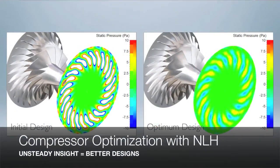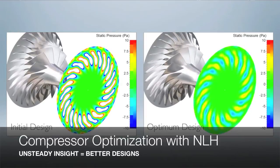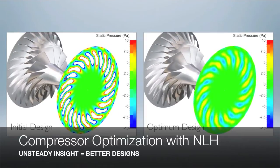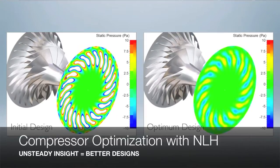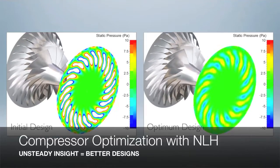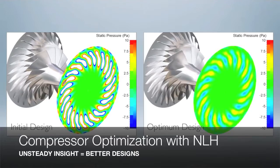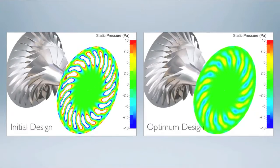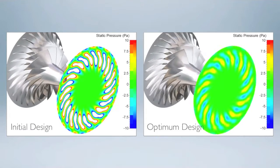Here we see an example of a compressor optimization where the NLH has been used in order to attenuate the unsteadiness in the pressure field.